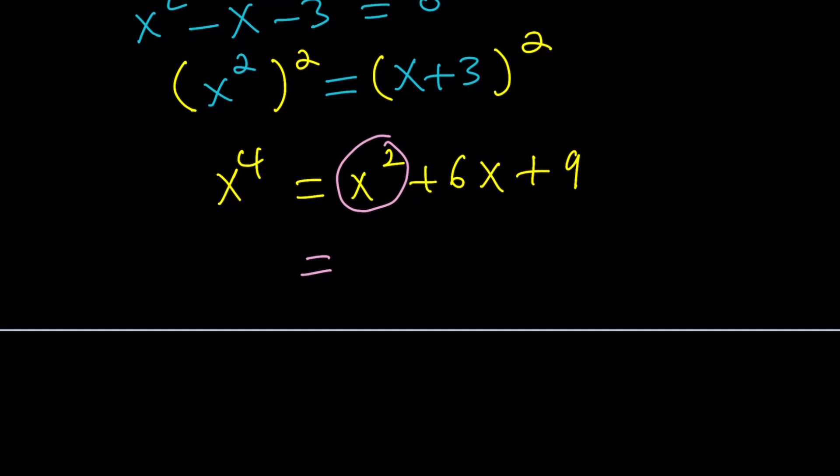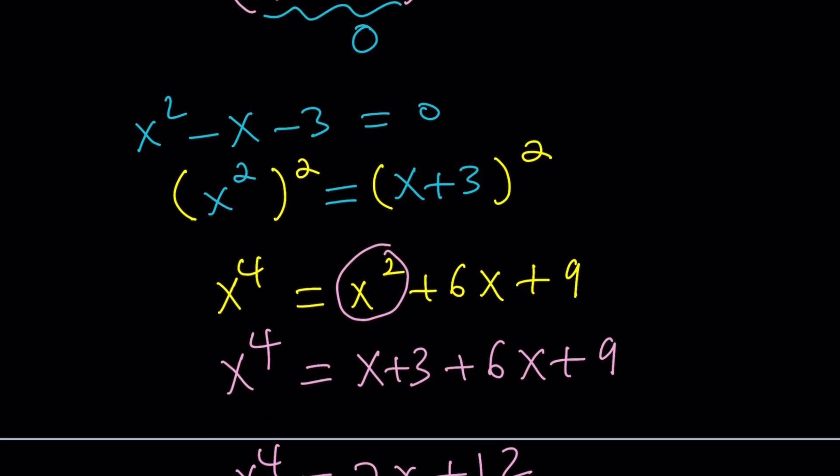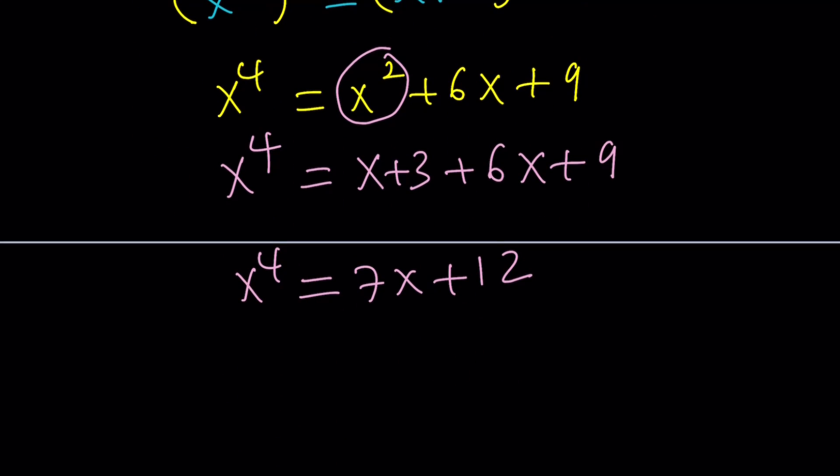Replace x squared with x plus 3 again. Our goal is to basically get rid of anything besides x and constants. In other words, we're linearizing this expression. 7x plus 12. You'll be surprised how helpful this is going to be. If you subtract 7x from both sides, you're going to notice something significant and amazing. So, you get x to the fourth minus 7x equals 12.